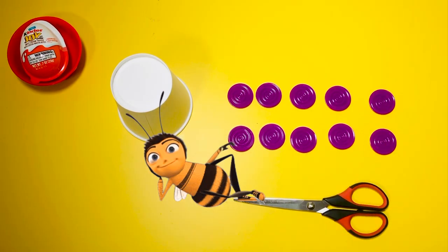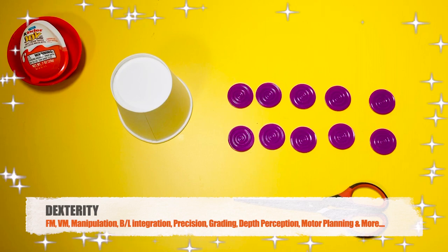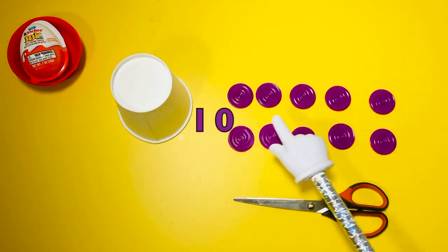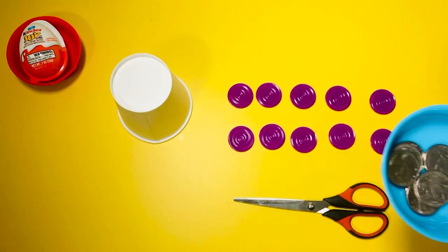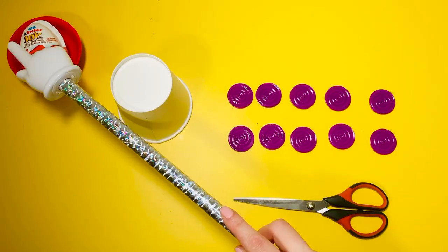Hi my busy bumblebees, this is Miss Olga, occupational therapist. Let's play games using checker pieces. I'm using 10 plastic coins, but if you don't have any, you can use 10 quarters, scissors, a cup, and when we're done, we